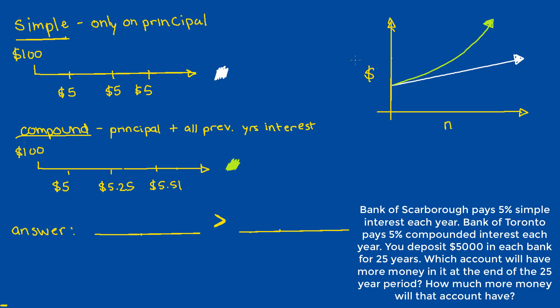So, if we were to illustrate this graphically, on the y-axis we have money, and on the x-axis we have the number of periods. And the white line represents the simple interest account, and the green line represents the compound interest account.